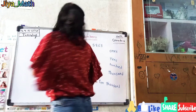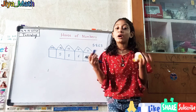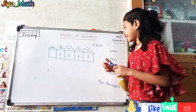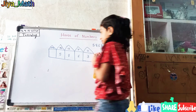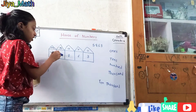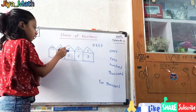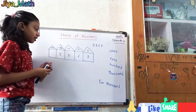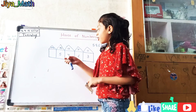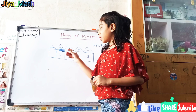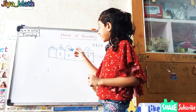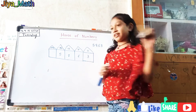So let me teach you how to spell. We should spell 5,863.